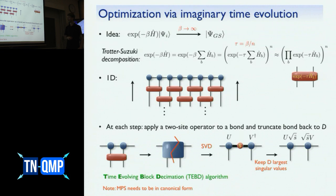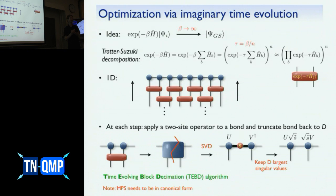This is known as the TEBD algorithm — time evolving block decimation. An important remark: for this truncation to be valid, your MPS must be in canonical form with respect to this bond, because then the SVD corresponds to a Schmidt decomposition and the singular values are your Schmidt coefficients. We then know the best approximation is to keep the largest Schmidt values.